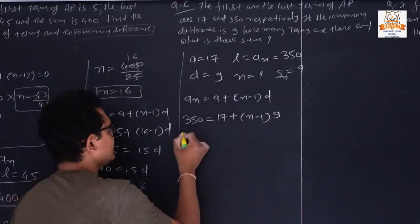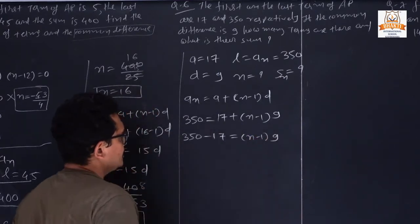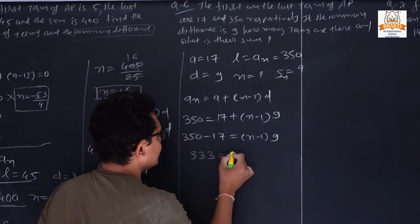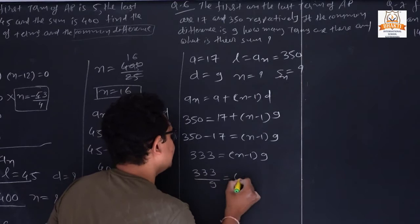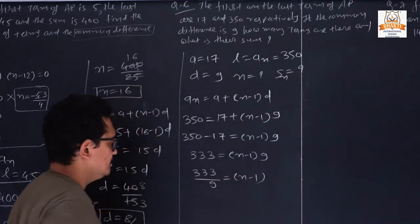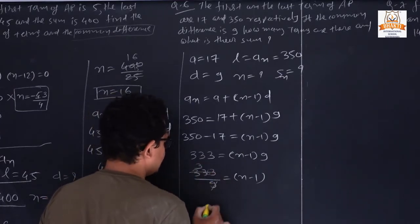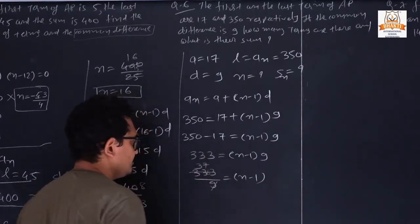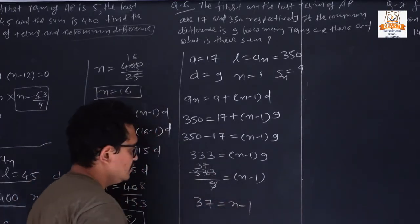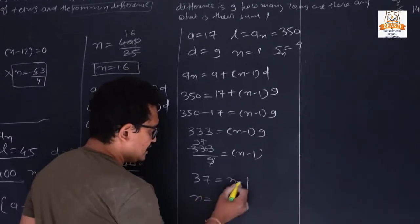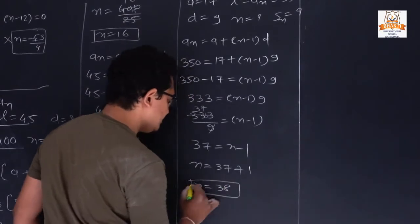Substituting: 350 = 17 + (n−1)×9. Moving 17 to the other side: 350 − 17 = 333 = (n−1)×9. Dividing: 333/9 = 37, so n−1 = 37, giving n = 38.